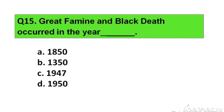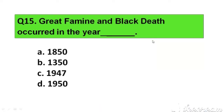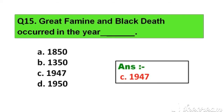Question number 15. Great Famine and Black Death occurred in the year: Option A. 1850, B. 1350, C. 1947, D. 1950. The right answer is Option C. 1947.